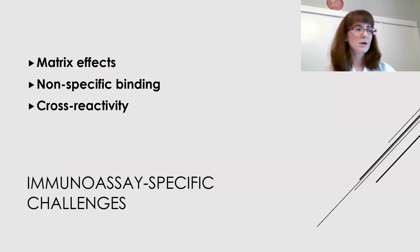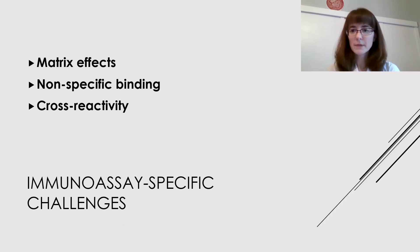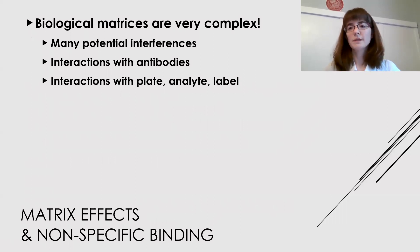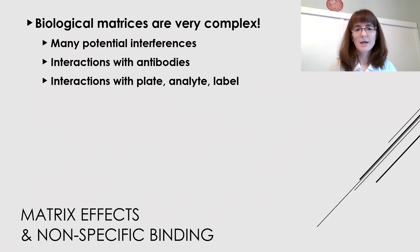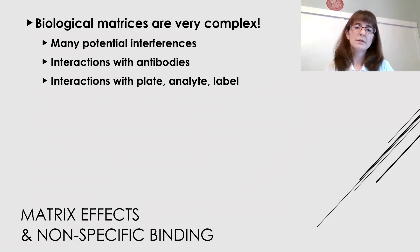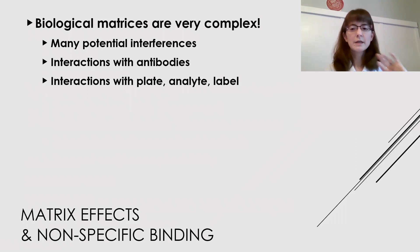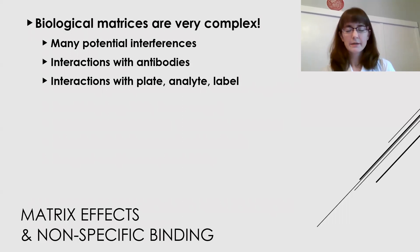The three specific challenges we're going to talk about in terms of immunoassay validation are matrix effects, nonspecific binding, and cross-reactivity of the reagents. When working with samples from cell culture supernatant or biological fluids such as blood, urine, or saliva, there are a lot of components aside from the one analyte you are looking for. In blood, for example, there would be hundreds of other proteins, DNA, a variety of salts, chelating agents, and lipid vesicles.